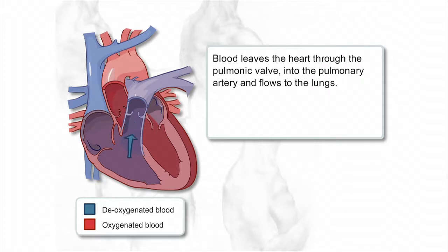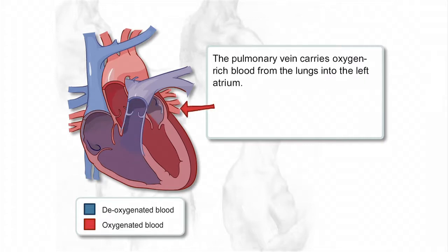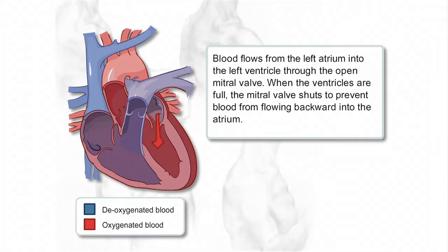Blood leaves the heart through the pulmonic valve into the pulmonary artery and flows to the lungs. The pulmonary vein carries oxygen-rich blood from the lungs into the left atrium. Blood flows from the left atrium into the left ventricle through the open mitral valve. When the ventricles are full, the mitral valve shuts to prevent blood from flowing backward into the atrium.